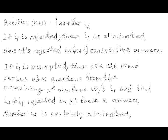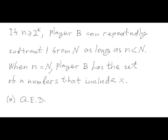Let's prove this. Suppose that I2 equals X. Then the previous group of K consecutive answers were all lies. And also, accepting number I1 immediately prior to it was also a lie, which makes K+1 consecutive lies — a contradiction. So number I2 can indeed be eliminated.